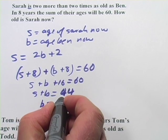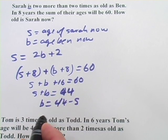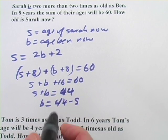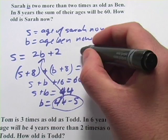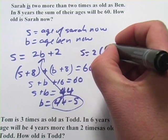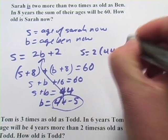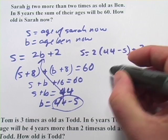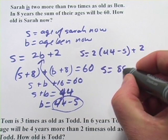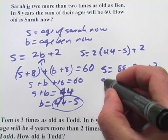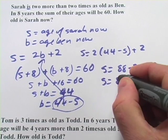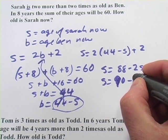So if we were to do that, B would equal 44 minus S. Just subtract S from each side. And then I'm going to plug this up into here. So S equals 2 times 44 minus S plus 2. So S equals 88 minus 2S plus 2. So S equals 90 minus 2S.